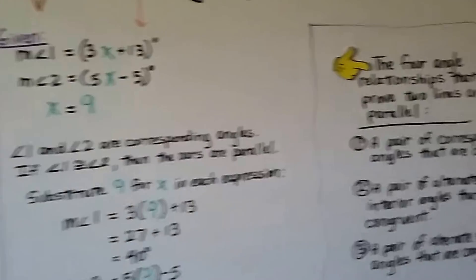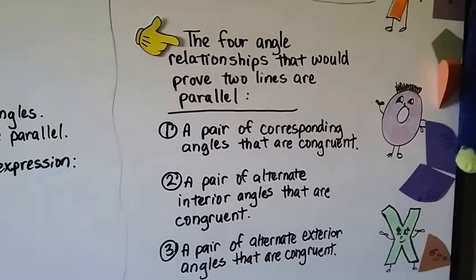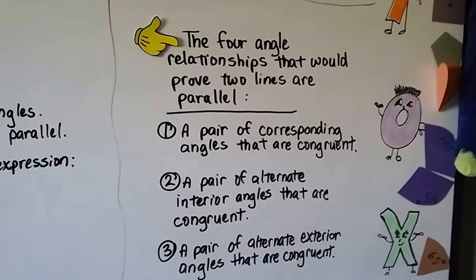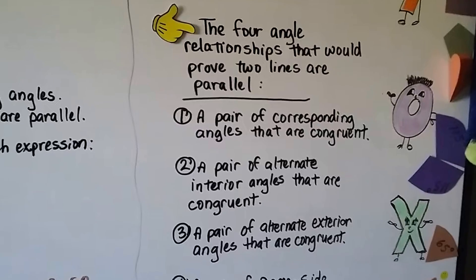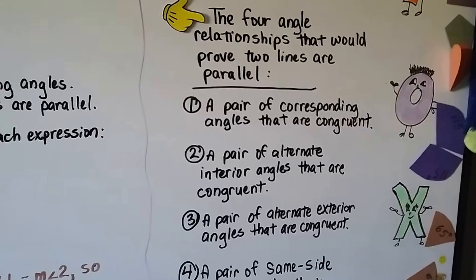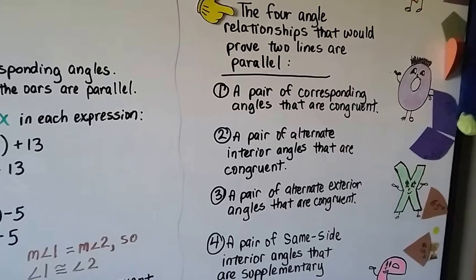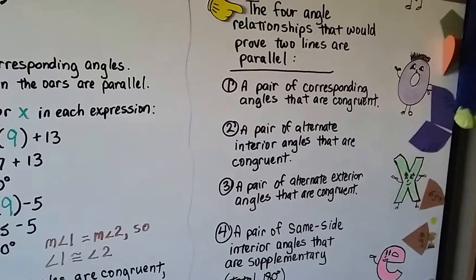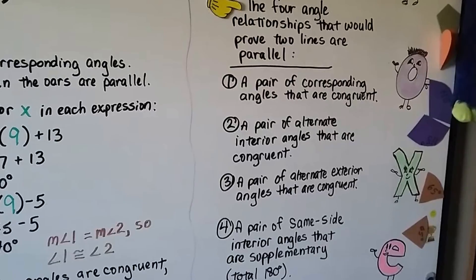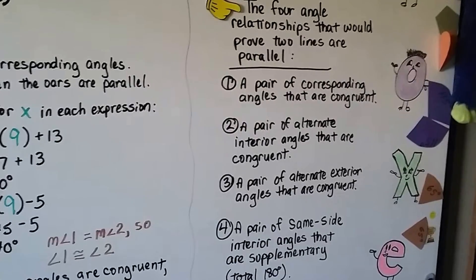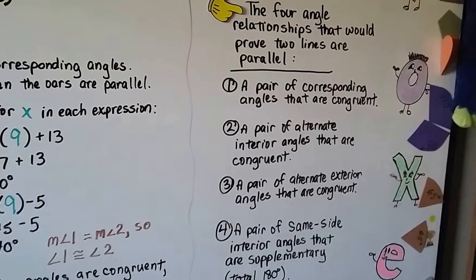The four angle relationships that prove two lines are parallel: first, a pair of corresponding angles that are congruent; second, a pair of alternate interior angles that are congruent; third, a pair of alternate exterior angles that are congruent; and fourth, a pair of same side interior angles that are supplementary, totaling 180 degrees. You might want to write that down and pause the video.